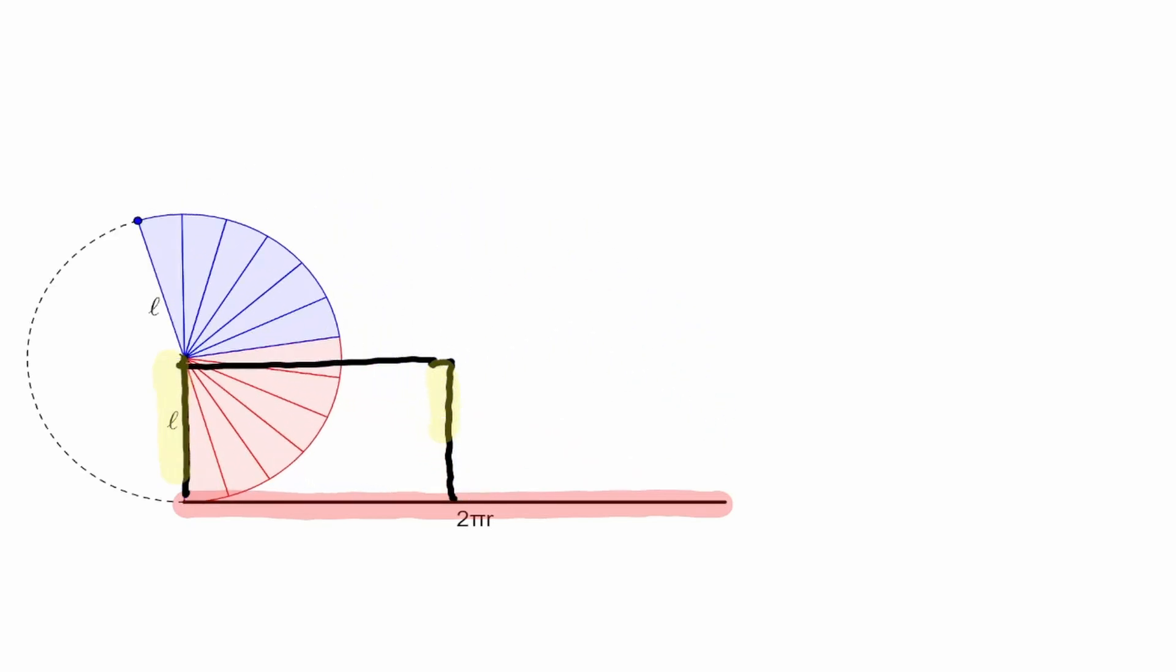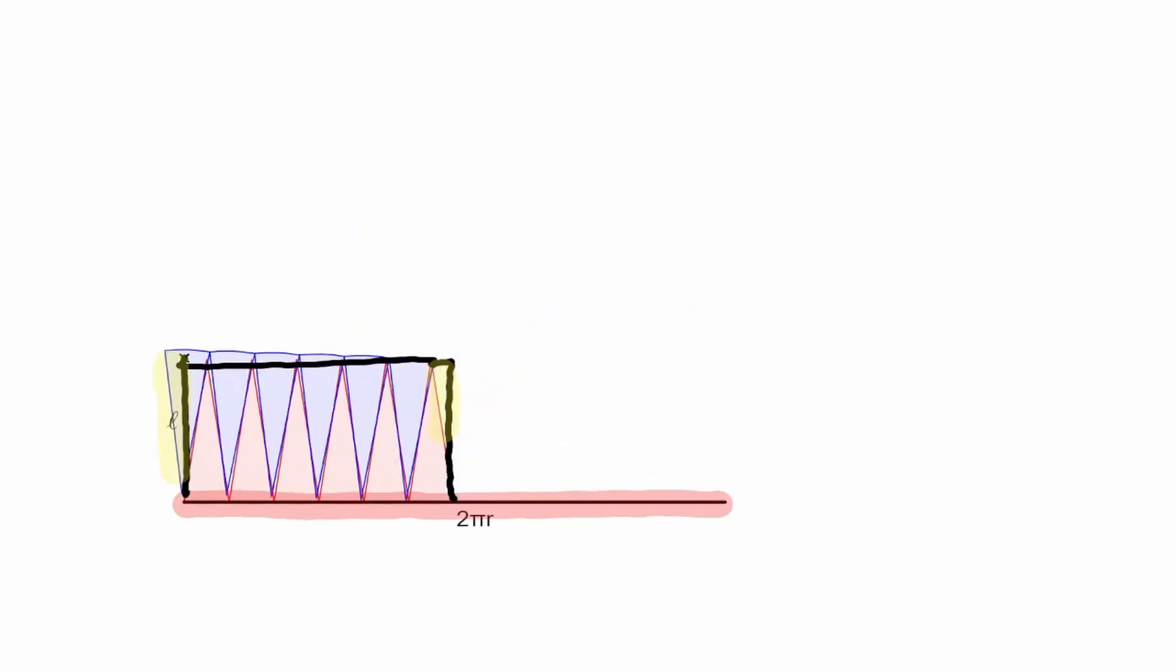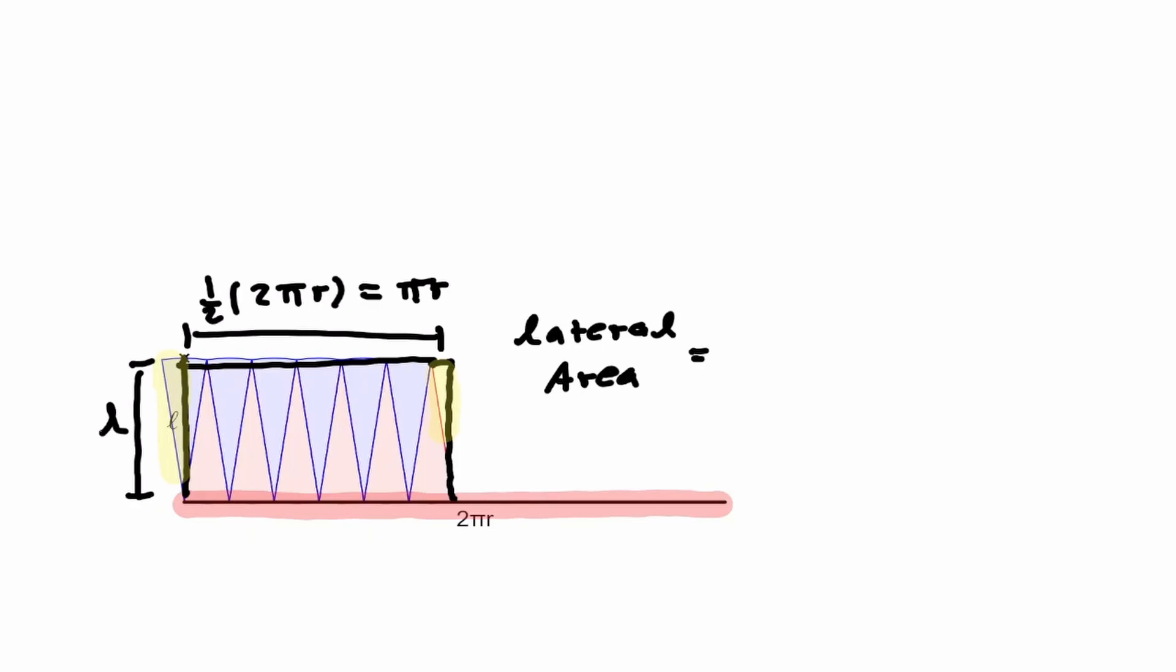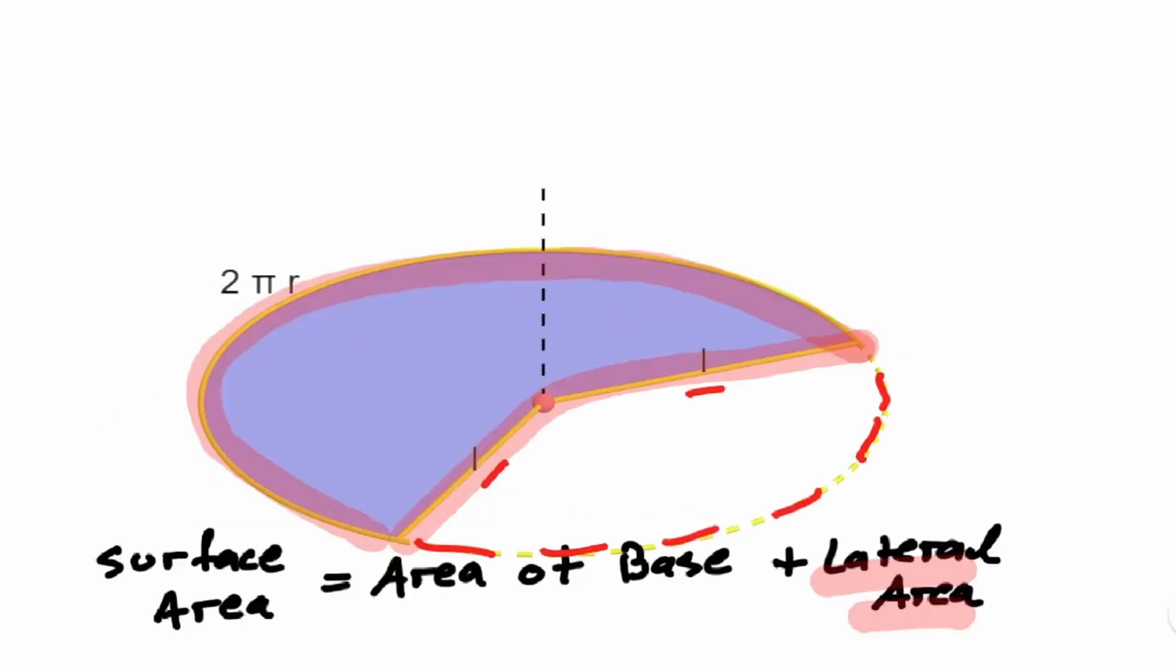What we have shown is that the area that we were interested in is nothing more than the area of a rectangle, where the side of this rectangle is half the circumference, and the height is equivalent to the lateral height. So we have shown that the area of this section is equivalent to the lateral height times pi r.